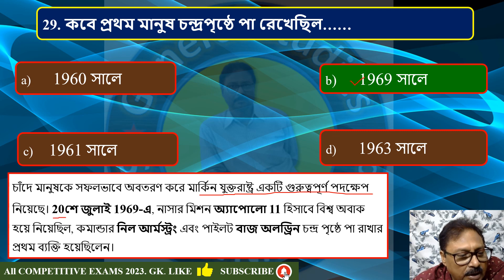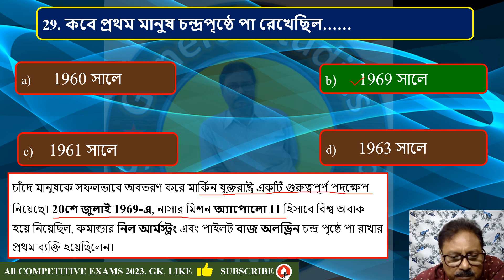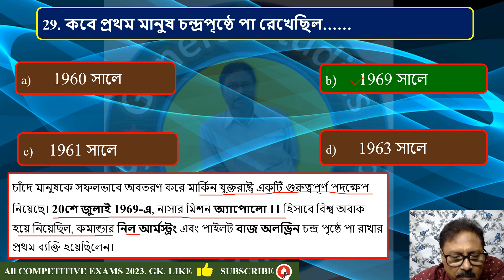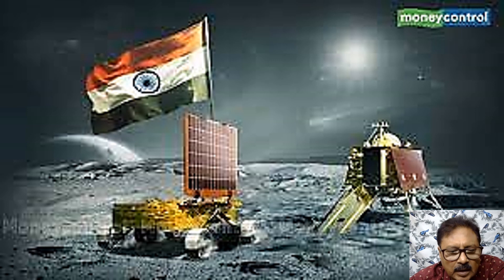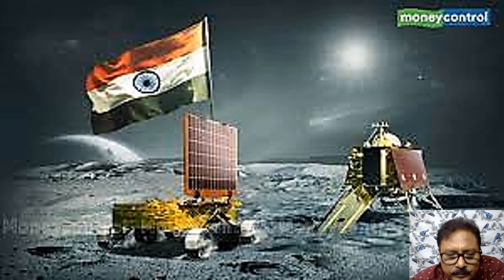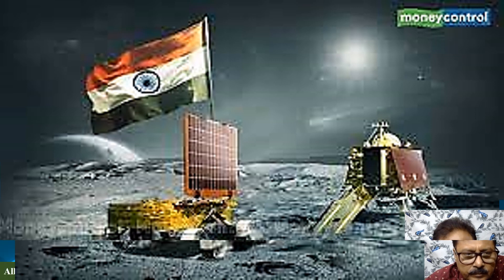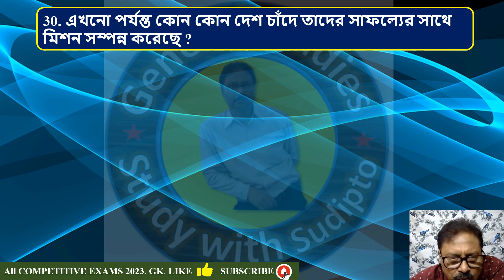On 20 July 1969, NASA's Mission Apollo 11 landed on the Moon. The commander was Neil Armstrong and the pilot was Buzz Aldrin.